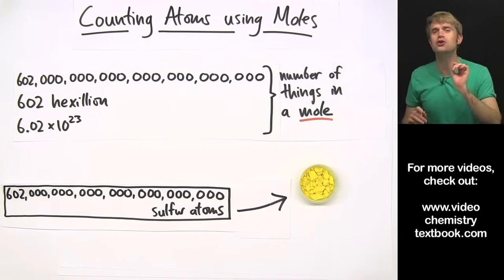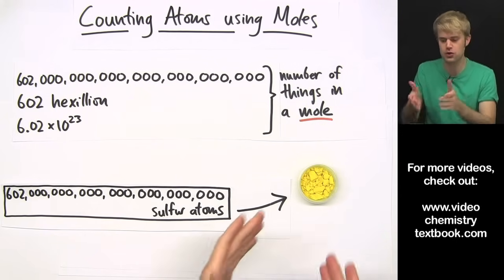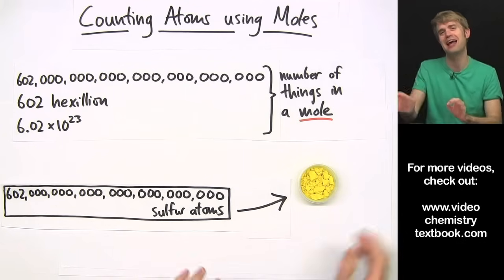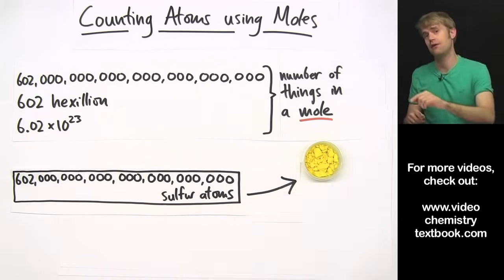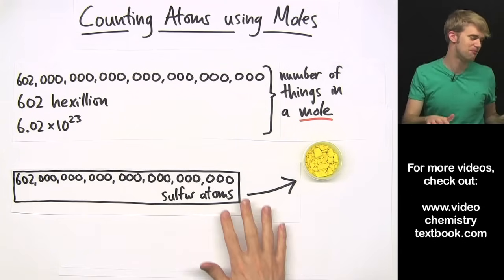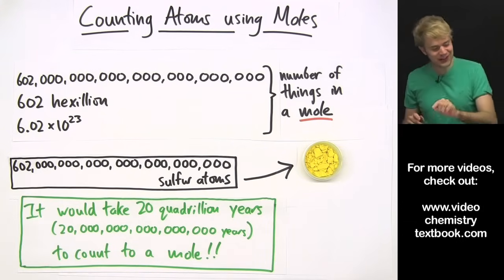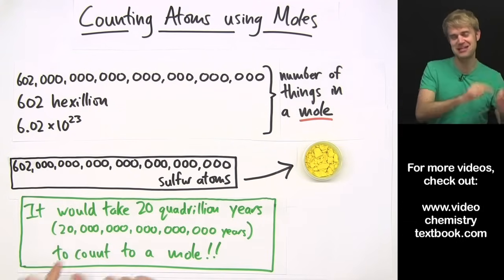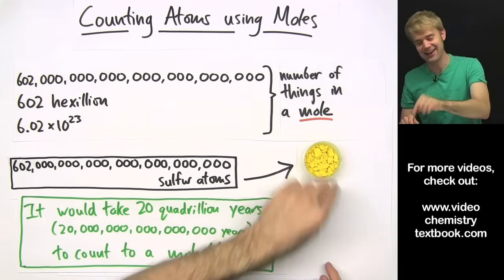One, atoms are way too tiny. We can't even see them with a very powerful microscope, so there's no way that I could have seen the atoms and counted them out. Second of all, even if I could count out the sulfur atoms, there are so many things in a mole that it would take 20 quadrillion years to count from zero up to a mole. So even if I could see these atoms, there's no way I could count them out.